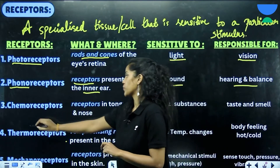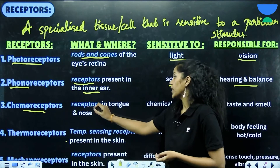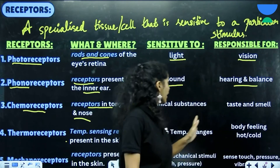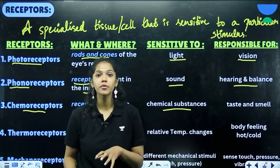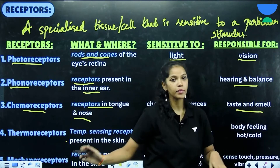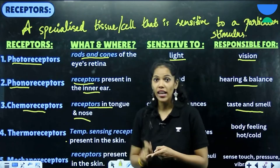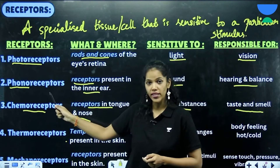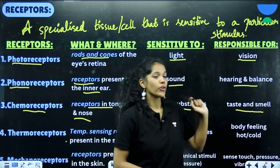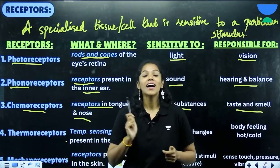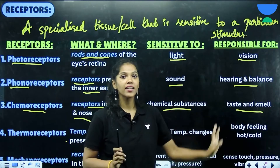Coming to chemoreceptors — chemoreceptors are sensitive to chemical substances. They are present in your tongue and nose, and they are responsible for your taste and smell. So remember: photoreceptors for vision, phonoreceptors in the inner ear for hearing and balance, and chemoreceptors for taste and smell.